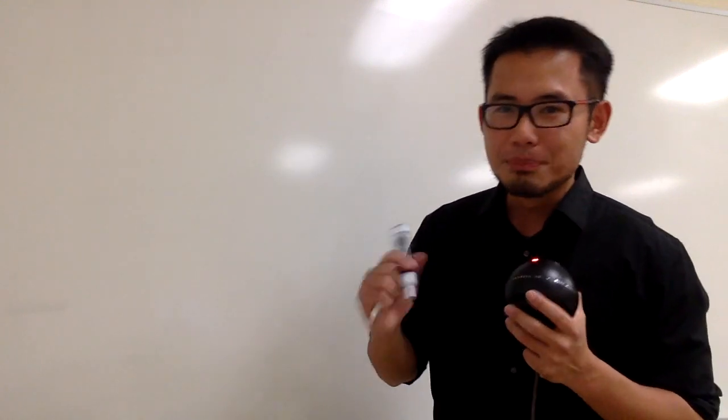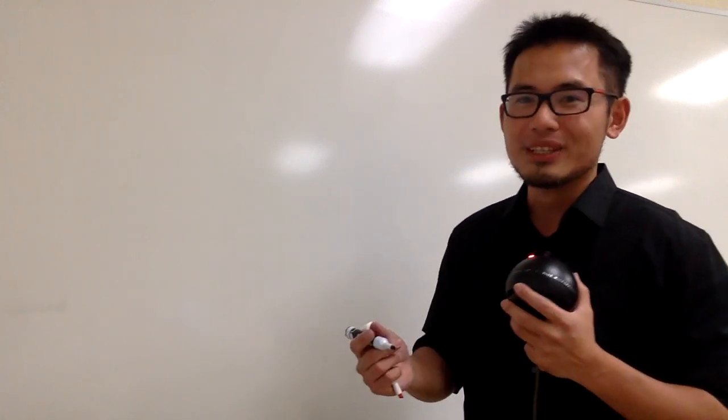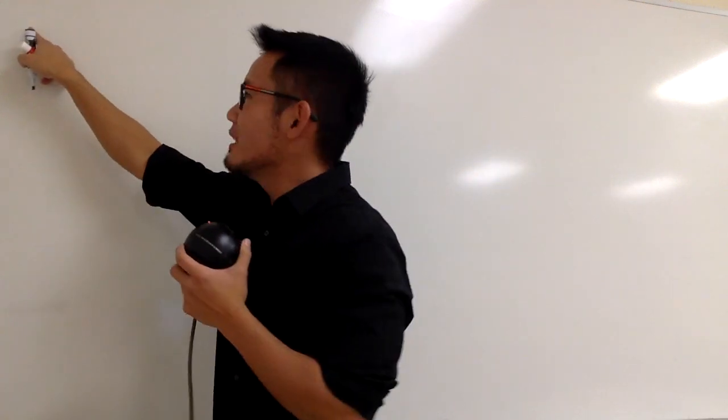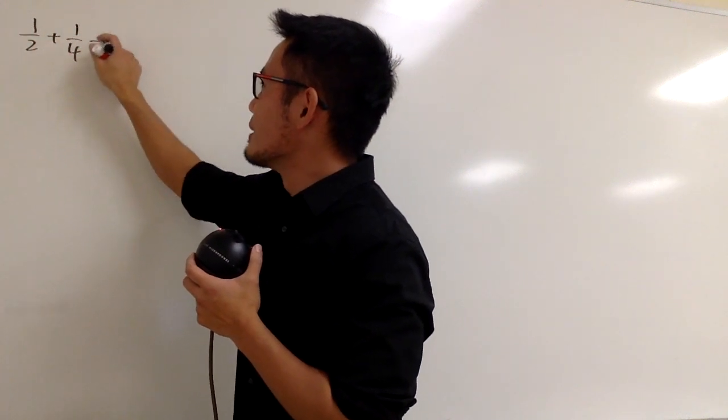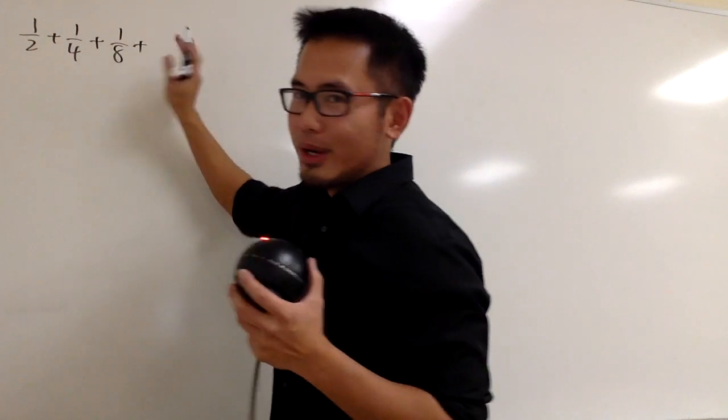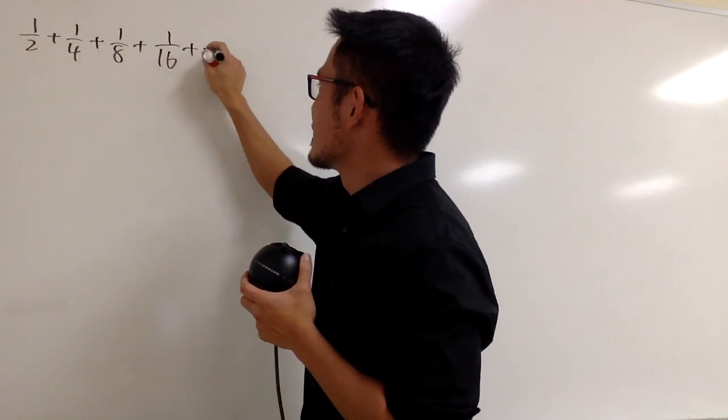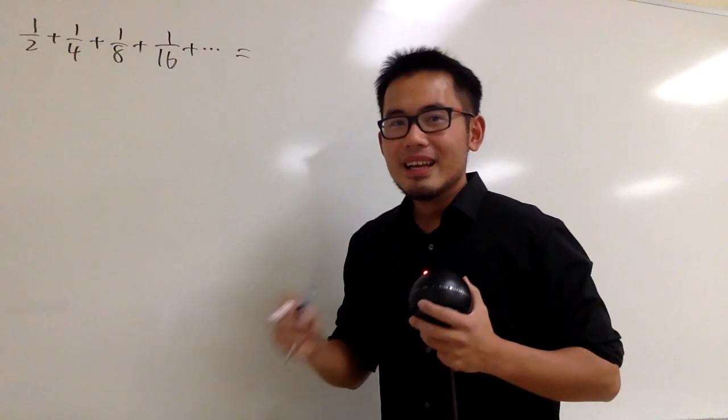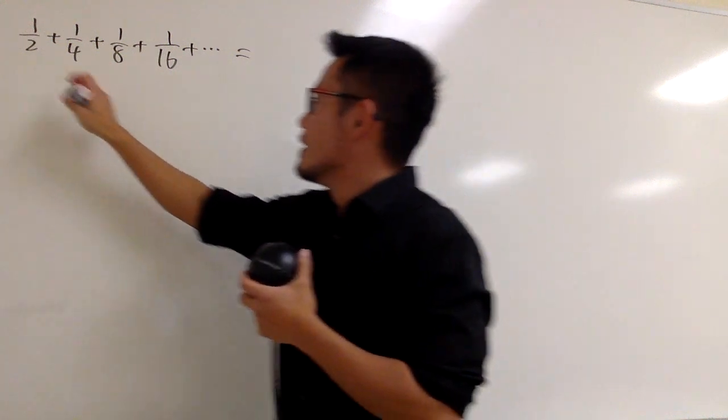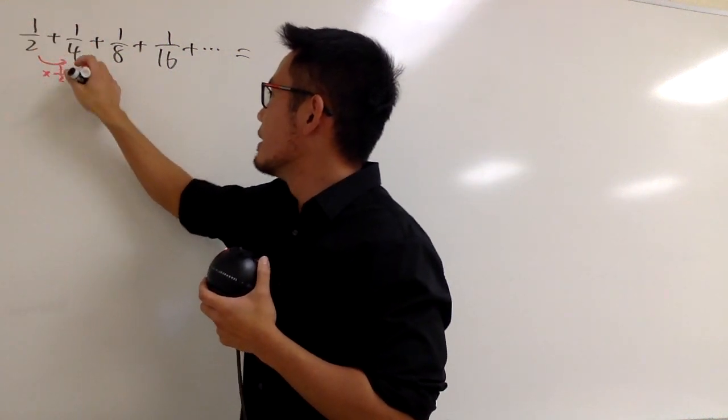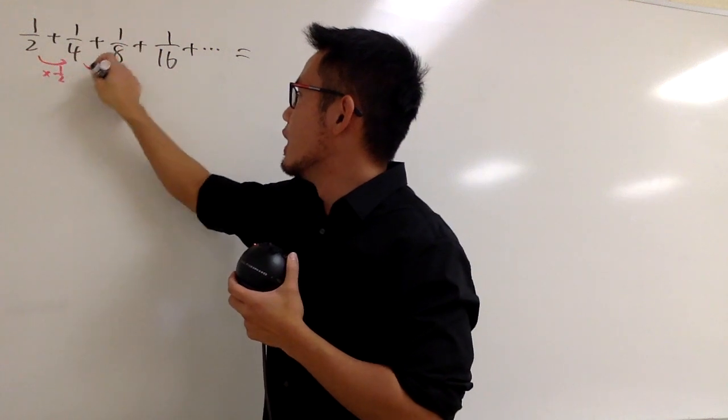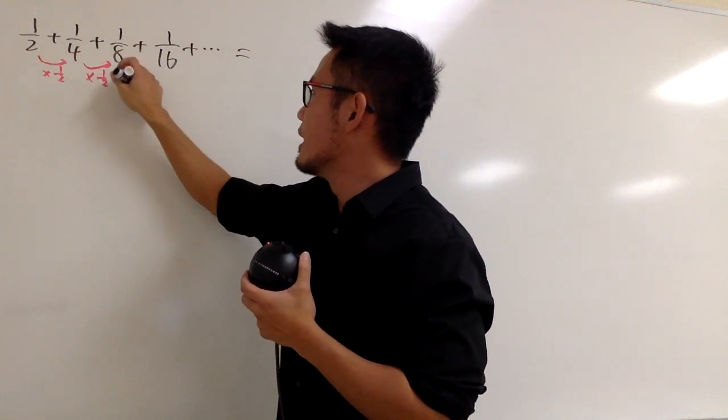First, let me go over perhaps the most popular infinite geometric series with you guys, which is the following: 1/2 + 1/4 + 1/8 + 1/16 + dot dot dot. You can show that from 1/2 to 1/4, we multiply by 1/2. Likewise, from 1/4 to 1/8, we multiply by 1/2 again, and so on.